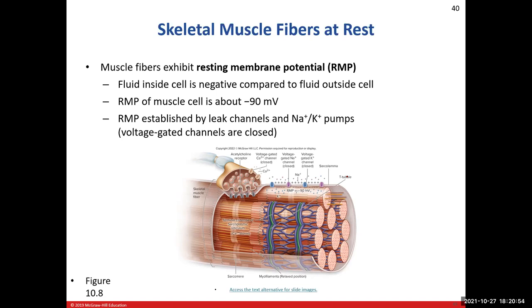The resting membrane potential in a muscle cell is negative 90 millivolts. The resting membrane potential of our skeletal muscle fiber at rest is negative 90 millivolts. In the neuron, it is negative 70 millivolts. This is established the same way we established the resting membrane potential in a neuron. We have our leak channels, so sodium and potassium are leaking in and out of the cell 24/7, and then we have our sodium-potassium ion pumps helping to establish the concentration gradient.